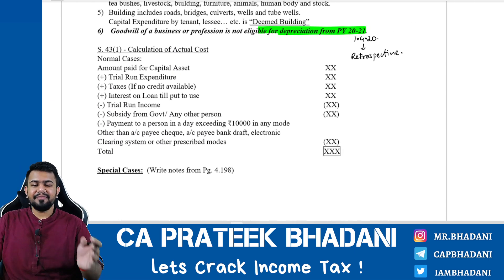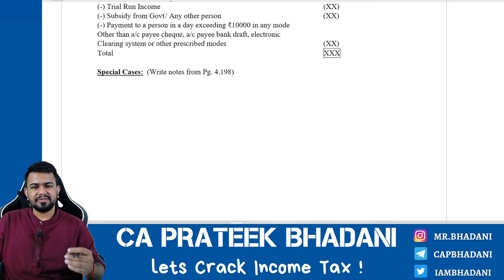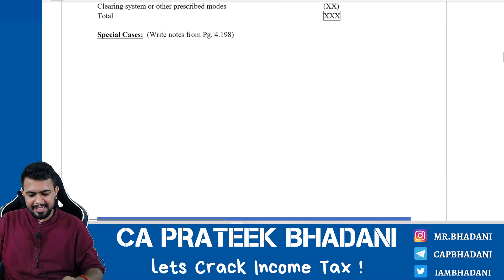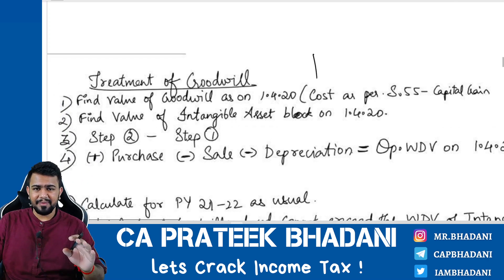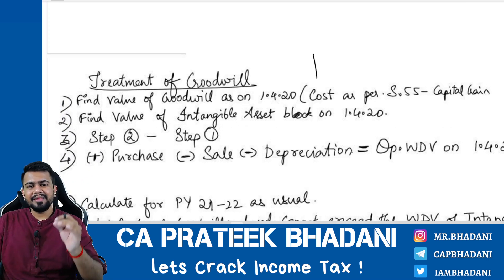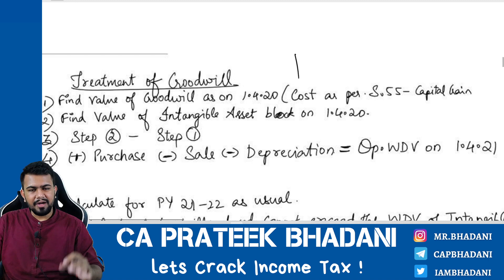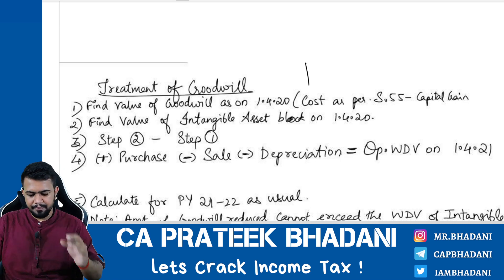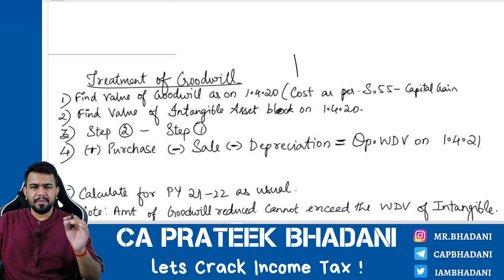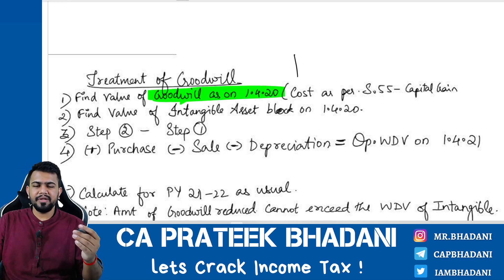Since this amendment was introduced during the year itself, people were already aware that depreciation could not be claimed on goodwill, so it is not a major issue. The calculation remains normal. Step number one: find out the value of goodwill as on 1.4.2020. Take the purchase cost of goodwill and reduce the depreciation for the number of years it was used up to previous year 2019-20.